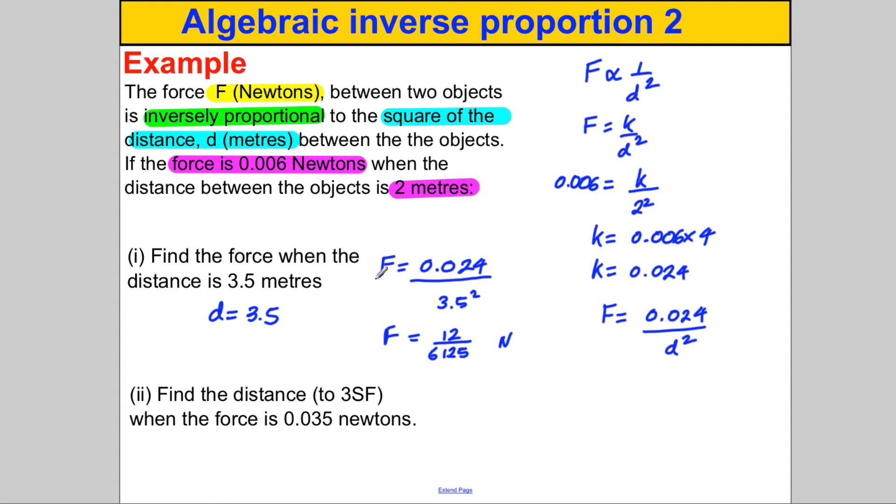Then it says here: find the distance to three significant figures when the force is 0.035 Newtons. So here we are told to round. We're given that the force is 0.035 Newtons, so subbing that in: 0.035 must therefore equal 0.024 divided by D squared.